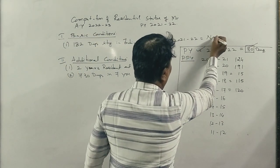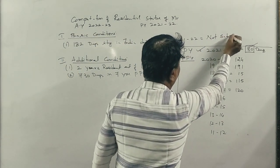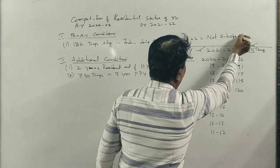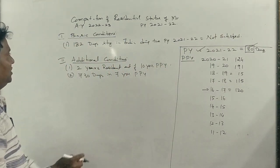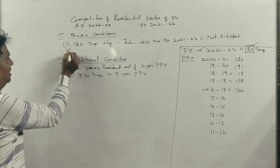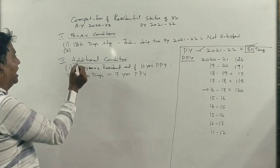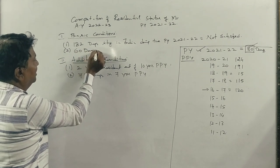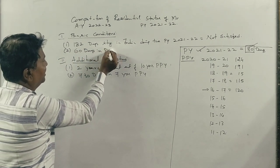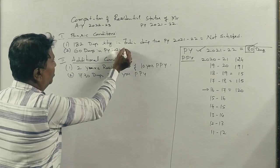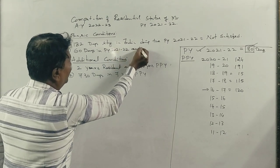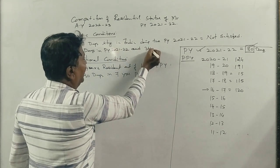That means he is not satisfied. Then, if he is not satisfied, he will be given the second basic condition to satisfy. That means 60 days in the previous year, 21-22, and 365 days.